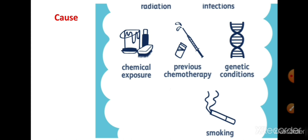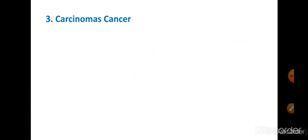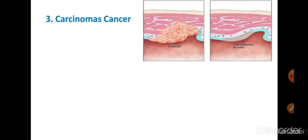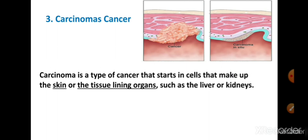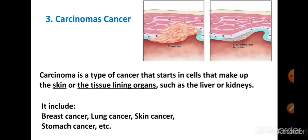Next type of cancer is carcinoma cancer — it is the most common type of cancer. यह cancer epithelial tissue में arise होता है, particularly in the skin और internal organs के outer tissues में। Carcinoma is a type of cancer that starts in the cells that make up the skin or the tissue lining organs such as the liver and kidney। इसमें भी cell division होता है और उस पर कोई control नहीं रहता। Examples include breast cancer, lung cancer, skin cancer, stomach cancer, etc.